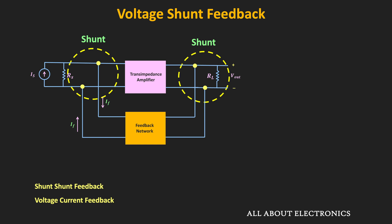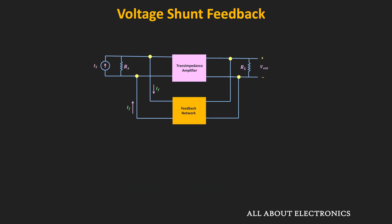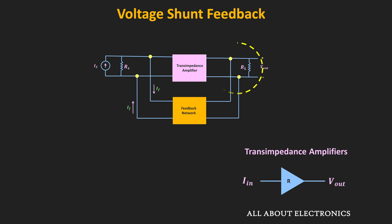This topology is mainly suited for the trans-impedance feedback amplifier, because here the input signal is the current signal while the output signal is the voltage signal. Since we have the shunt connection on the output side, the effective output impedance of the feedback amplifier will reduce. And similarly, on the input side, since we have a shunt connection, the input impedance of this feedback amplifier will also reduce by the factor of 1 plus Aβ.